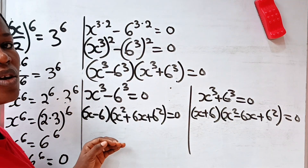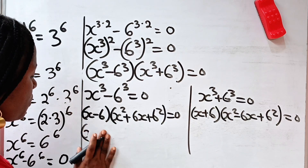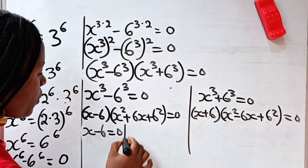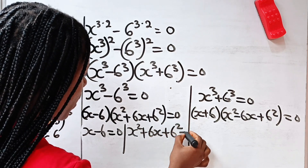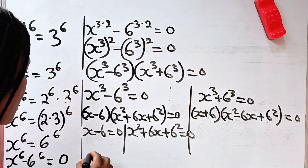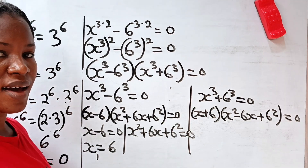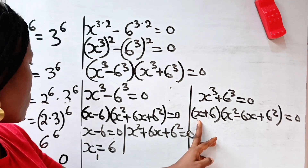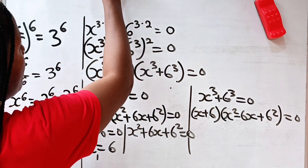From x cubed minus 6 cubed equals 0, we have x minus 6 equals 0, or x squared plus 6x plus 6 squared equals 0. From x minus 6 equals 0, we get x equals 6. This is the first value of x. We will solve the quadratic x squared plus 6x plus 6 squared equals 0 separately.